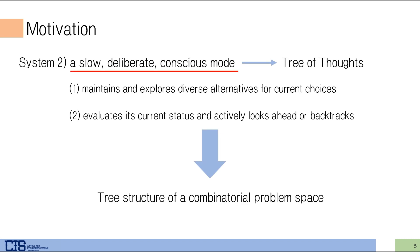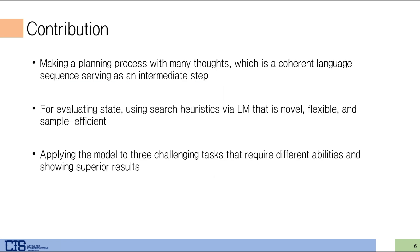This processing has two main properties. For decision-making, humans maintain and explore diverse thoughts, and for every thought, they evaluate each of them to look ahead or backtrack for related thoughts. Also, they use a tree structure which is similar to problem space when humans decide. So ToT makes deliberate decisions with many thoughts. Also, evaluating the state with LM is a novel approach for search, and this makes the model work flexibly and sample-efficiently. Finally, they apply their model to three challenging tasks and show superior performance.